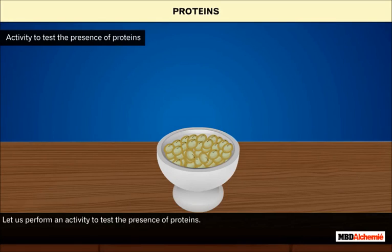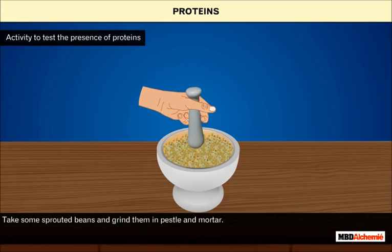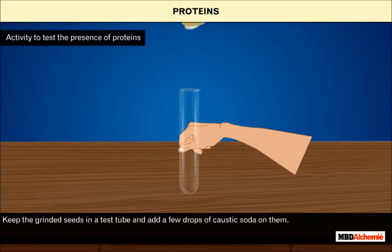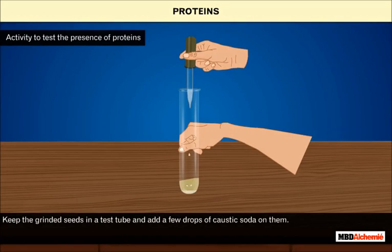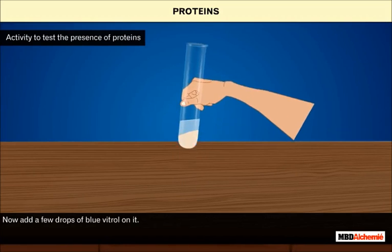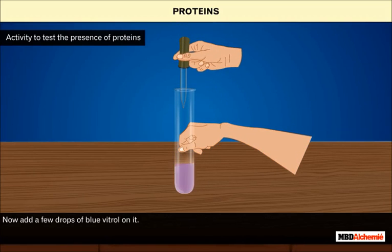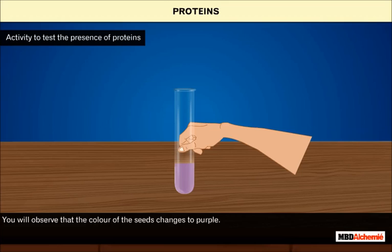Let us perform an activity to test the presence of proteins. Take some sprouted beans and grind them in pestle and mortar. Keep the ground seeds in a test tube and add a few drops of caustic soda on them. Now add a few drops of blue biuret on it. You will observe that the color of the seeds changes to purple, which confirms the presence of proteins.